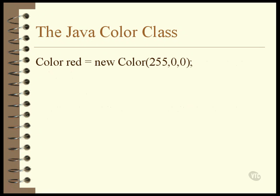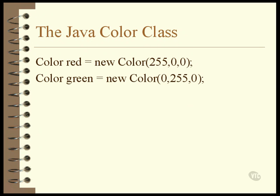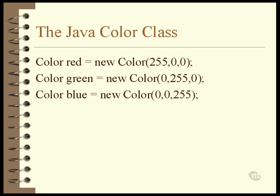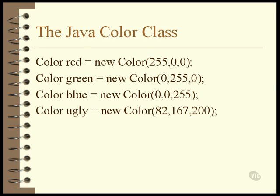The constructor of the color class requires that all three colors be specified. In this example, the color red is created by specifying the red component to be at its maximum and the green and blue components to be completely turned off. The green color object could be constructed the same way with red and blue turned completely off and the green component set to its maximum, and blue works the same way.